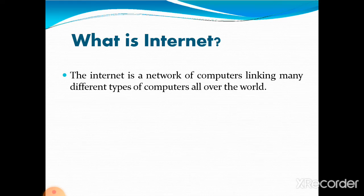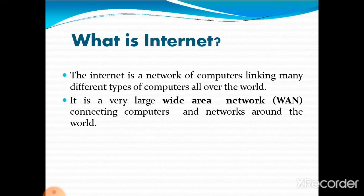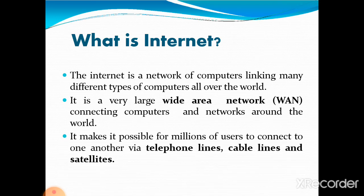The internet is a network of computers linking many different types of computers all over the world. It is a very large wide area network that is also called WAN, connecting computers and networks around the world. It makes it possible for millions of users to connect to one another via telephone lines, cable lines and satellites.